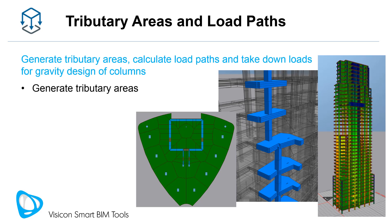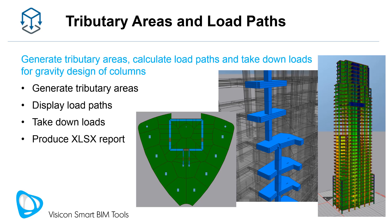Some Visicon users are only interested in the tributary area of each level. Others like the display of load paths to help them better explain their design to other project participants. Tributary areas are taken down and reported in structured Excel reports. The magnitude of column and wall loads is also displayed using a heat map, allowing you to identify heavily loaded members. You can use this fast and flexible load algorithm to back-check your FEM results or to run your gravity column designs.